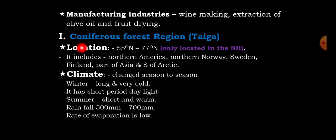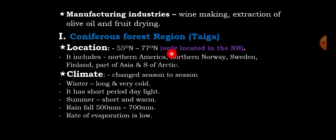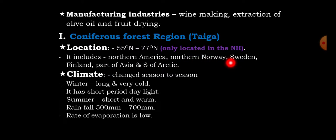The second cool temperate zone is the Coniferous Forest Region, also called Taiga. It is located between 55 to 77 degrees north, only in the northern hemisphere. It includes North America, North Norway, Sweden, Finland, parts of Asia, and areas south of the Arctic.